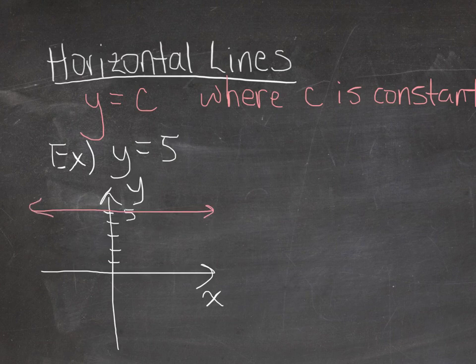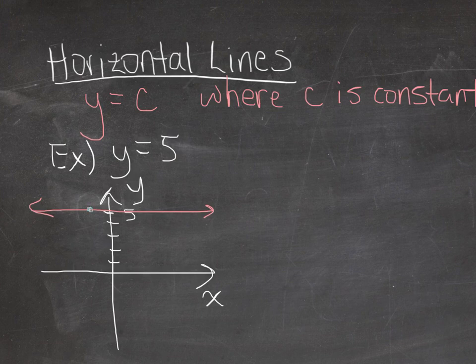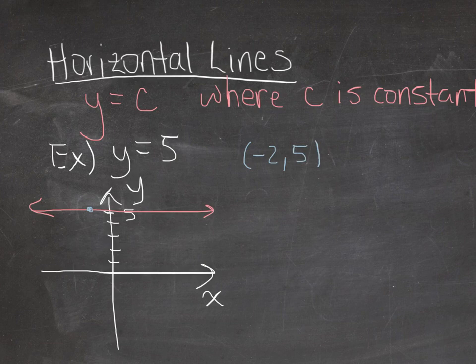What is the slope of a horizontal line? Well, if you pick any two points on the line and plug it into the slope formula that we've seen before, we can calculate the slope. So let's pick a point here. Let's say it's the point negative 2, 5. And let's pick a point over here. Let's say it's 3, 5.